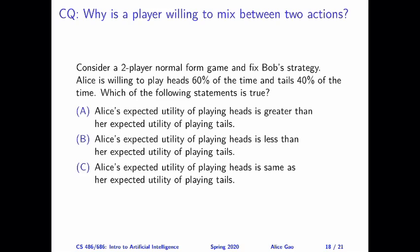It's only when the two actions give her the same expected utility that she's willing to mix between the two. The confusing point here is that the mixing probabilities have nothing to do with the expected utility itself. She can be mixing with any probability, and that always means the expected utility for the two actions is the same. So whether she plays heads with 90% probability or 30% probability, in both cases the expected utility for the two actions must be the same.